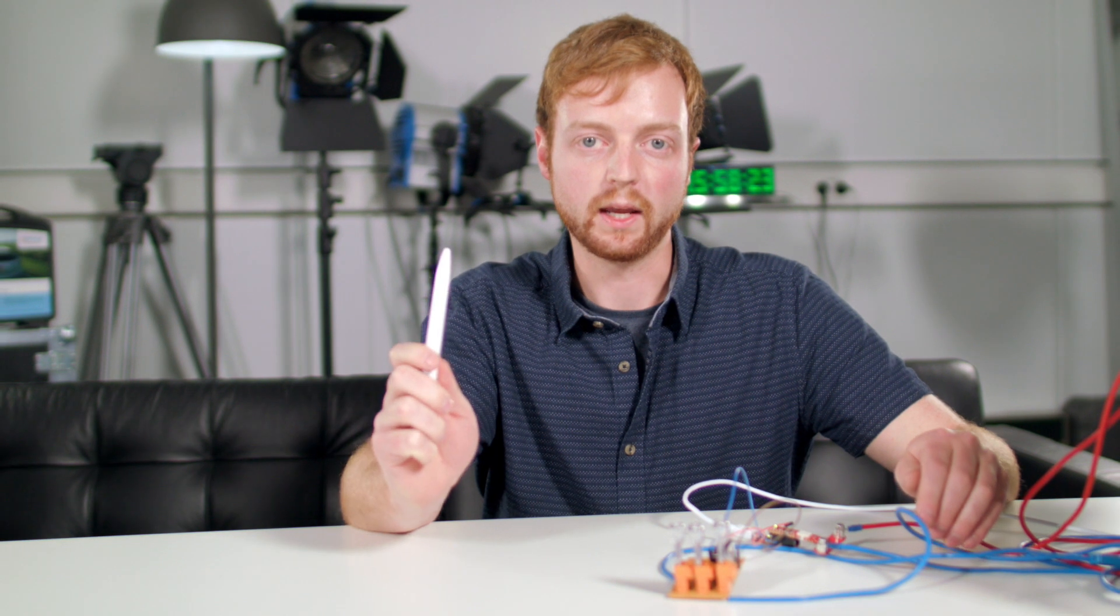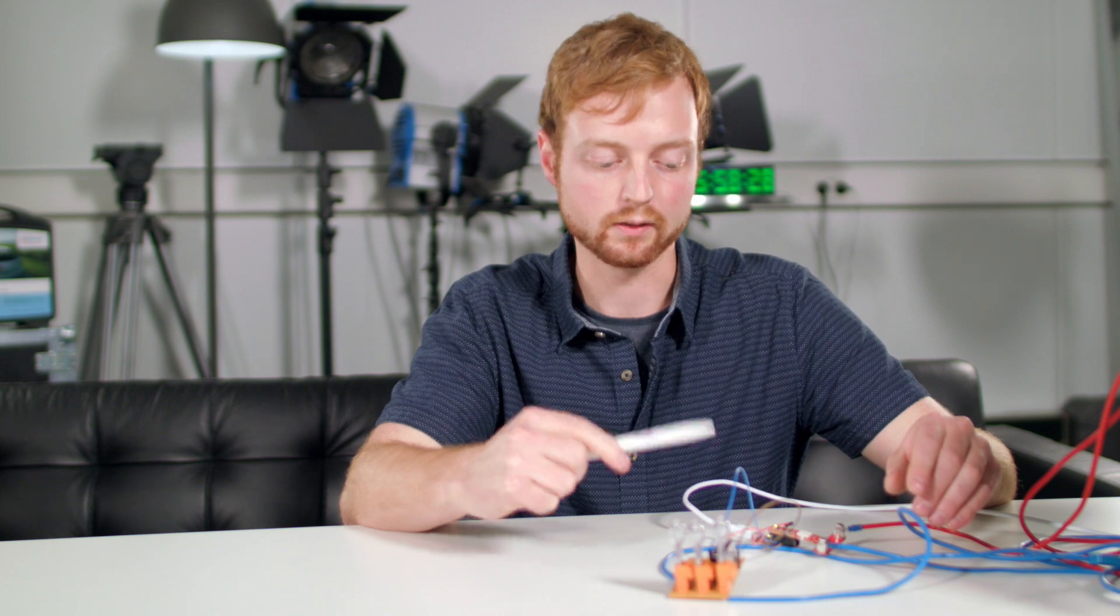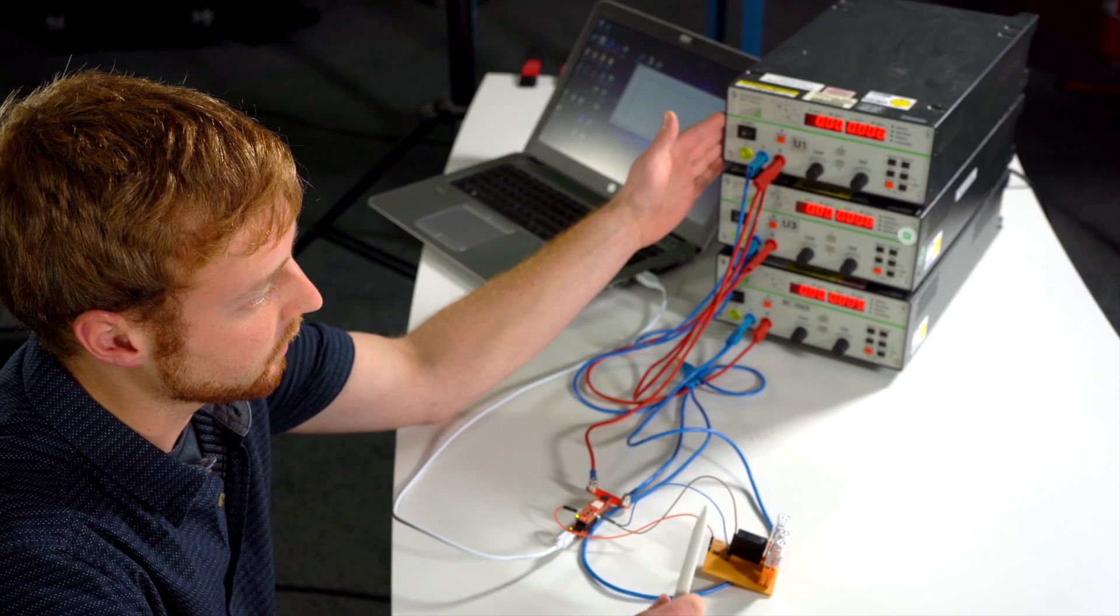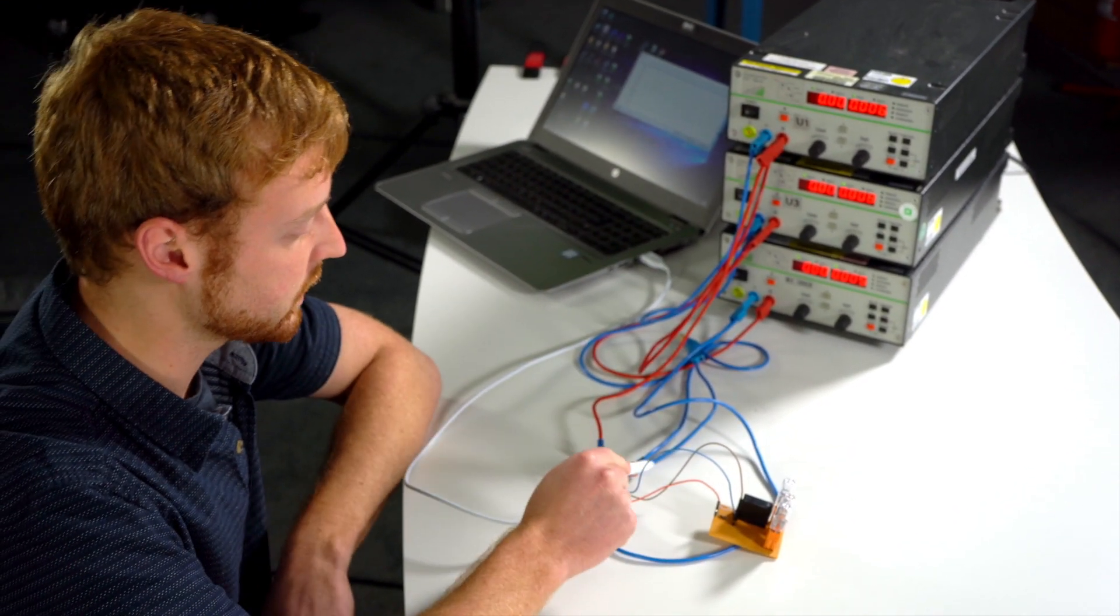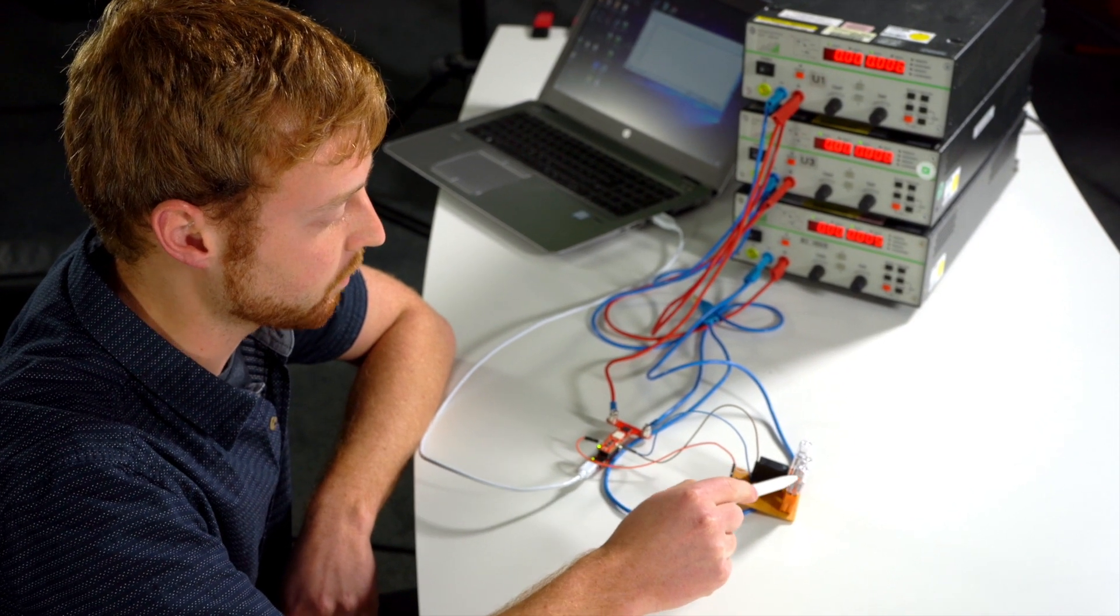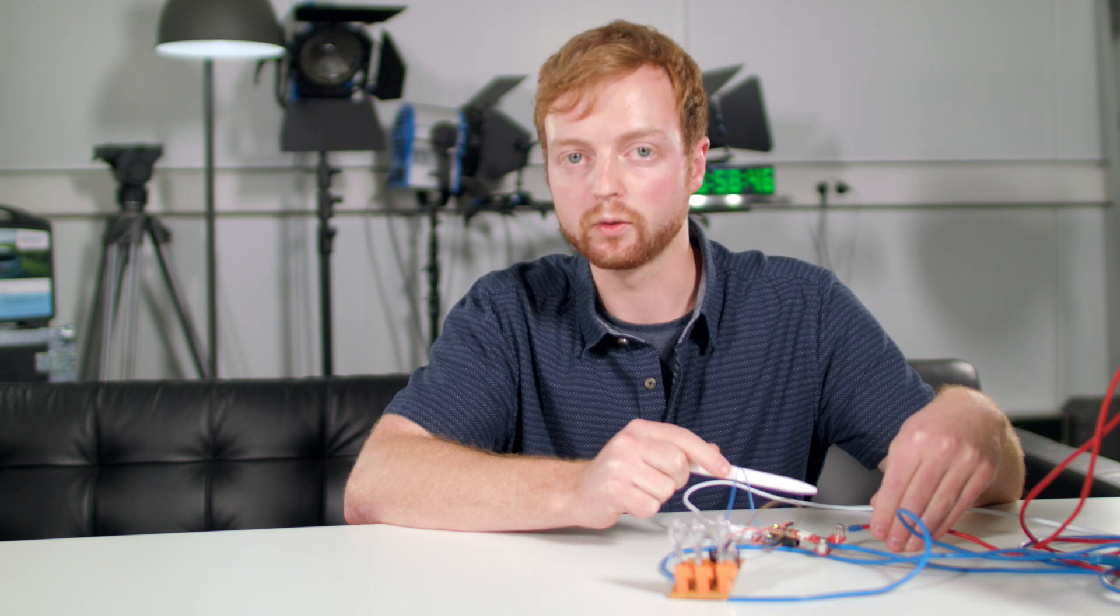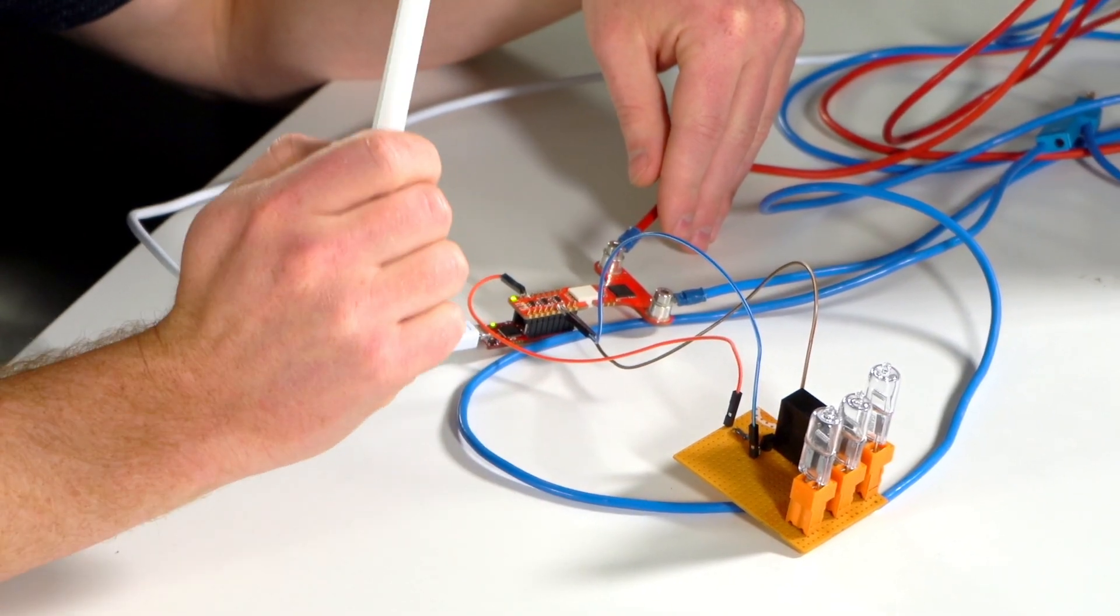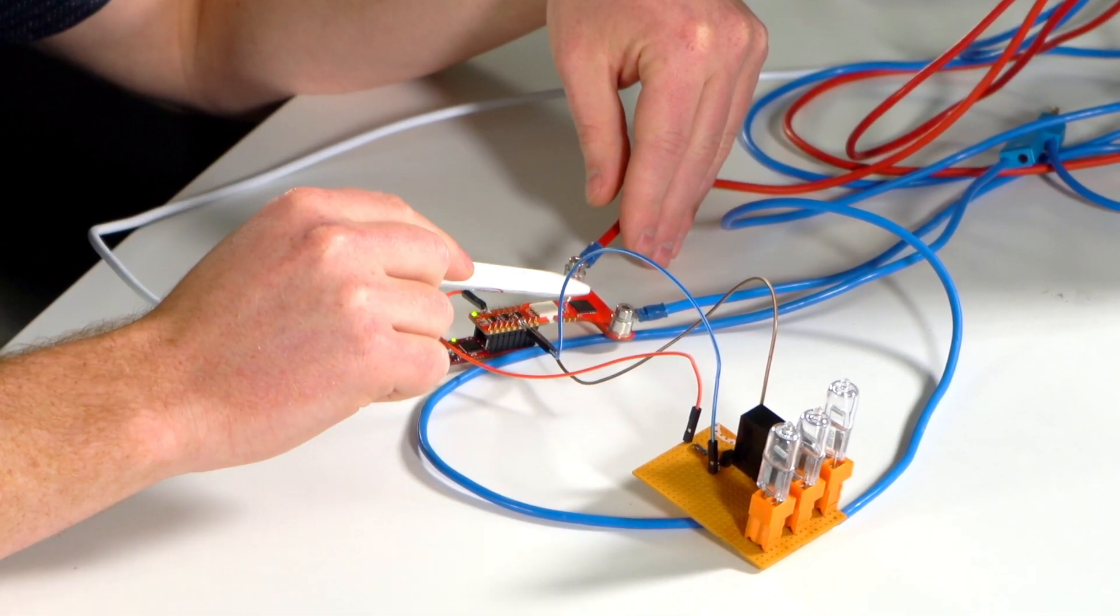Here I have prepared a crude setup to show you the overcurrent detection functionality of the sensor. There are three power supplies connected in parallel. The current runs through the sensor, through this relay and then powers these three lamps. The sensor is configured to 25A range and its overcurrent detection channel 2 is set to 15A.